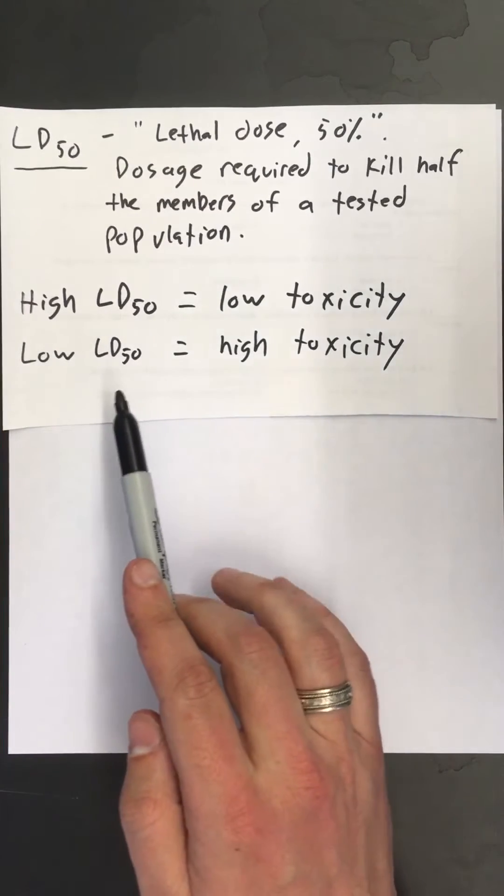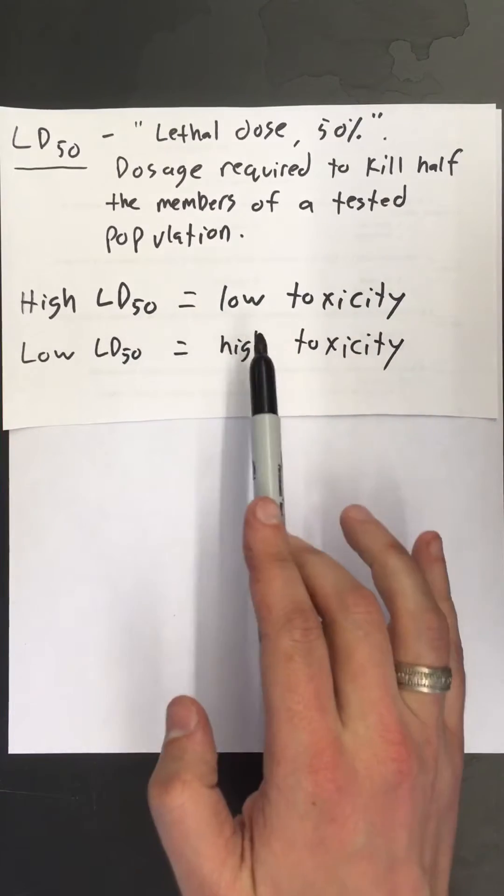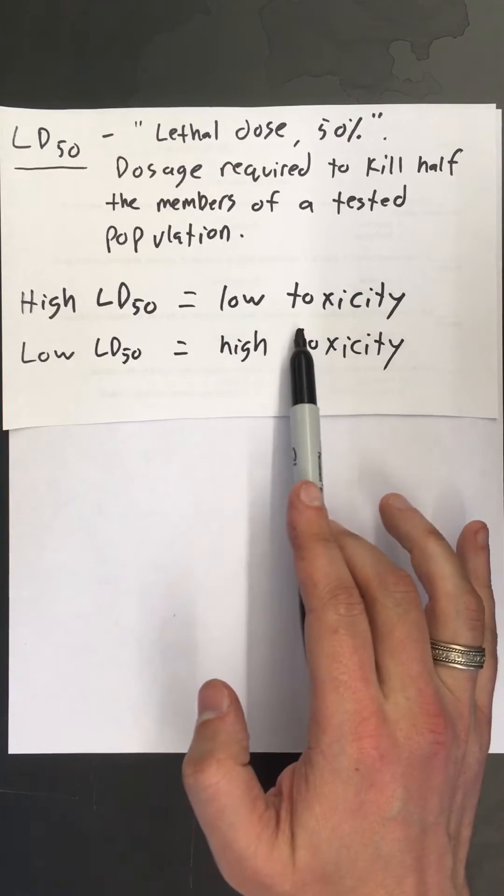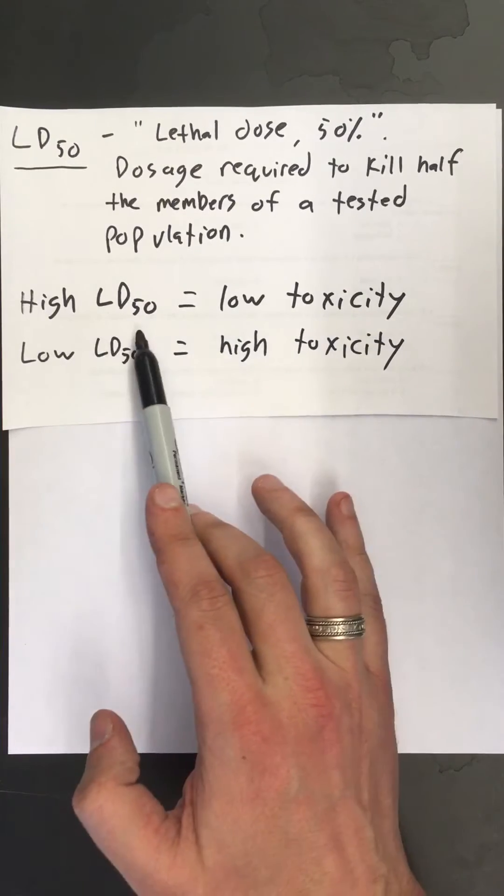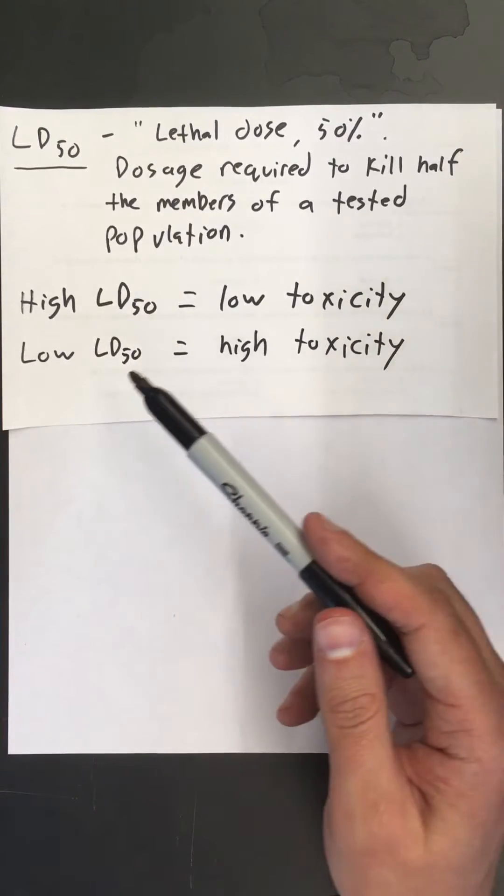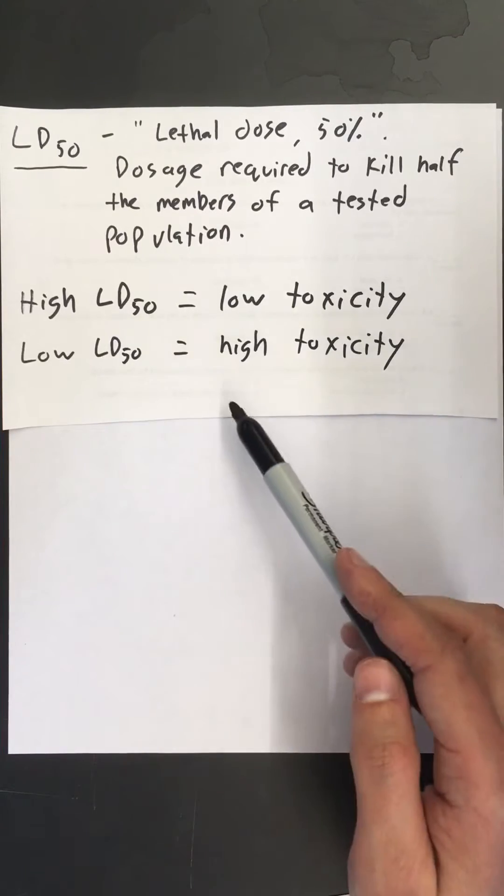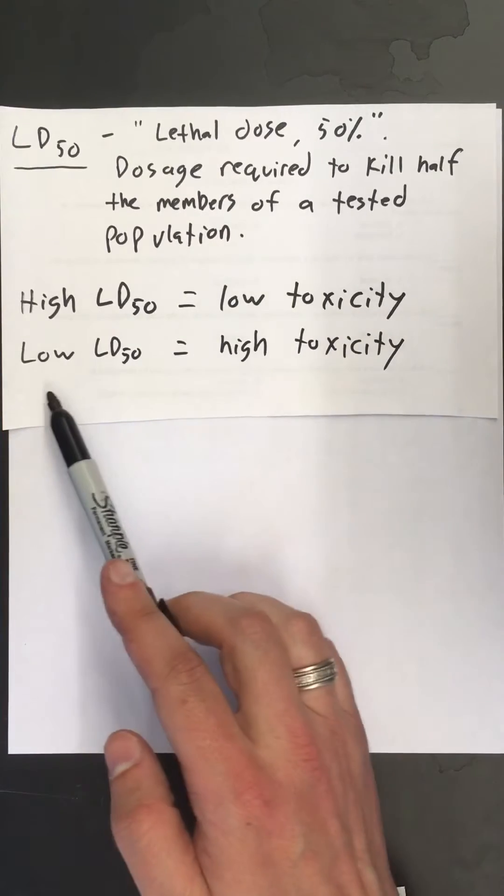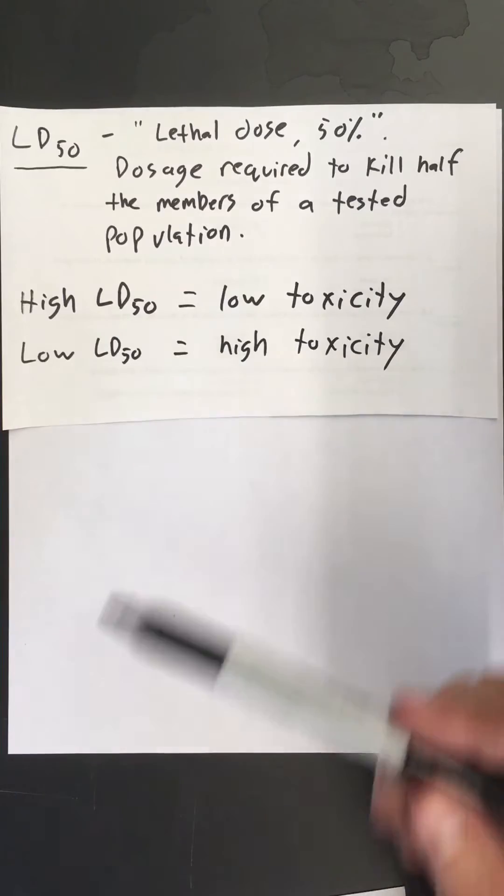The basic idea is that if something has a high LD50, that means it has a low toxicity, so it would take a lot of that thing to kill you. Conversely, a low LD50 means a high toxicity, so it wouldn't take that much of the thing to be dangerous.